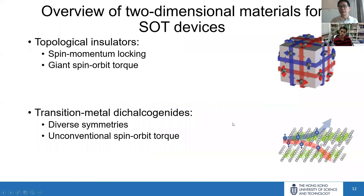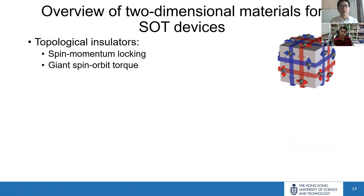Here is the overview. We will talk about two important categories of 2D materials. For the first one, we will discuss topological insulators, which have intrinsic spin-momentum locking from their topological surface states, allowing us to generate a giant SOT.